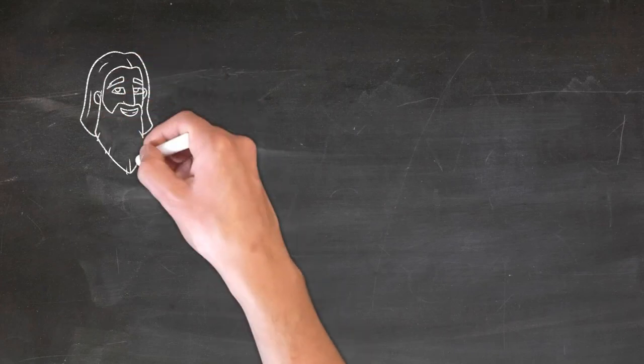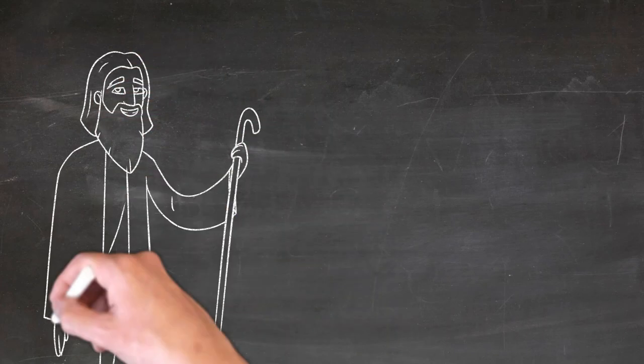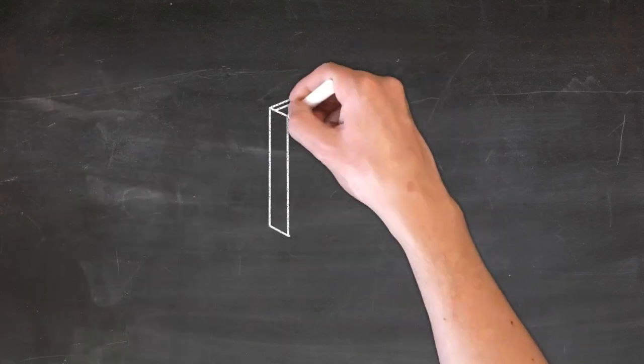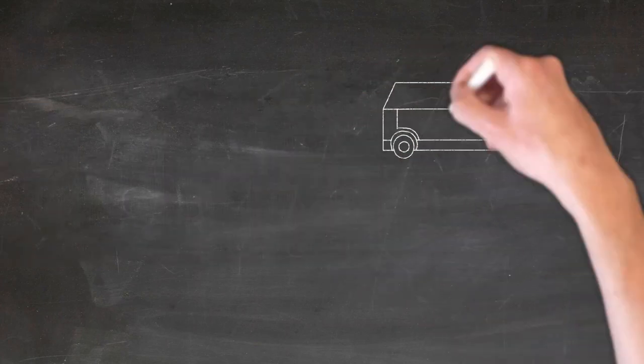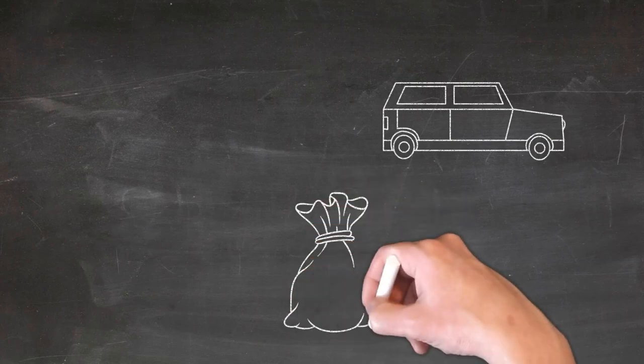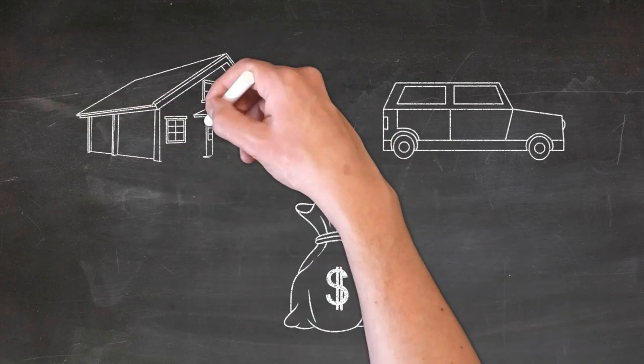God wants us not to be influenced by anything other than him. And we won't be influenced by anything else if we build our life on him and his word. But when we build our life on other things, we become easily influenced by things around us, just like sand is.